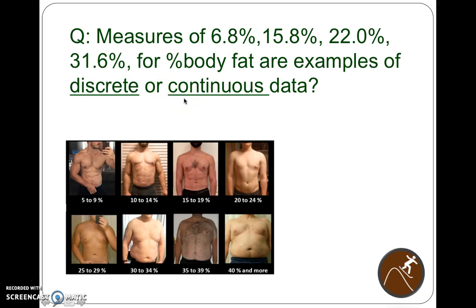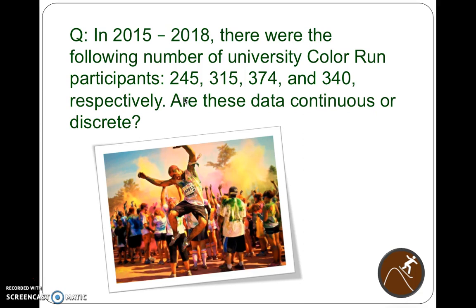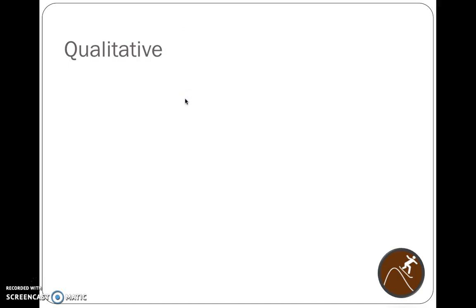Continuous — these values can take on an infinite number of possible data points, especially with an accurate caliper or good measuring system. Now, from 2015 to 2018 there were color runs at a university with 245, 315, 374, and 340 participants. Are these data continuous or discrete? They're definitely quantitative. The best answer is discrete — you can only have a whole person.